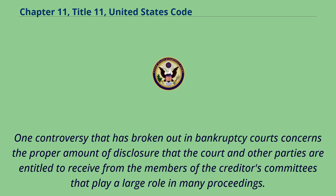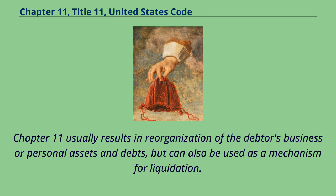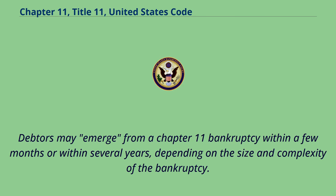One controversy that has broken out in bankruptcy courts concerns the proper amount of disclosure that the court and other parties are entitled to receive from members of creditors' committees that play a large role in many proceedings. Chapter 11 usually results in reorganization of the debtor's business or personal assets and debts, but can also be used as a mechanism for liquidation. Debtors may emerge from a Chapter 11 bankruptcy within a few months or within several years, depending on the size and complexity of the bankruptcy.